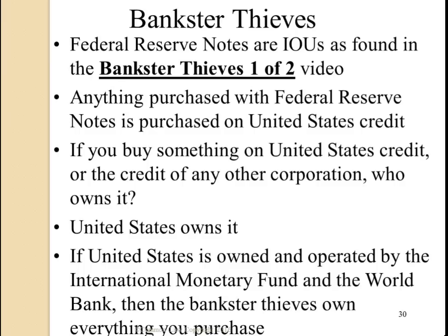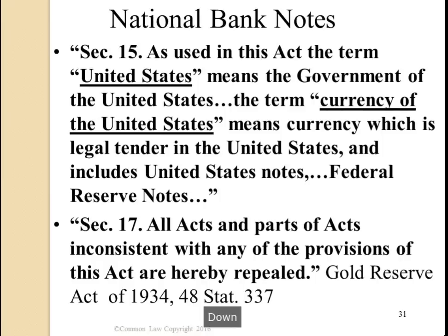Federal Reserve Notes are IOUs, as found in the Bankster Thieves 1 and 2 video. Anything purchased with Federal Reserve Notes is purchased on United States credit. If you buy something on United States credit, who owns it? United States owns it. If United States is owned and operated by the International Monetary Fund and the World Bank, then the bankster thieves own everything. This is the Gold Reserve Act of 1934, located at 48 Stat 337.